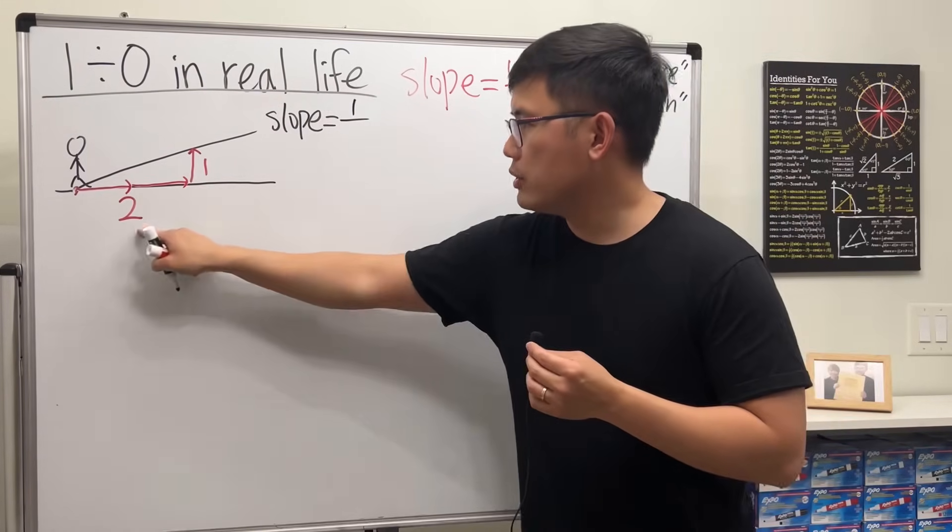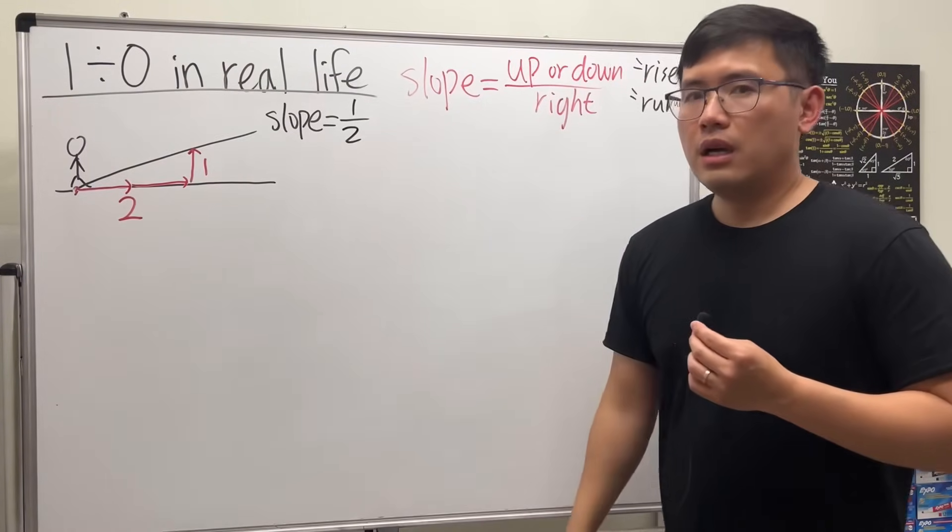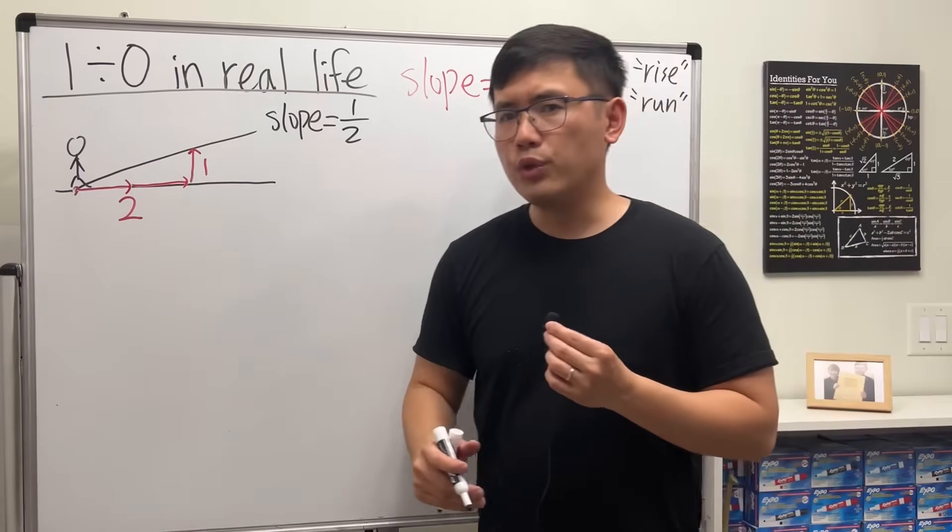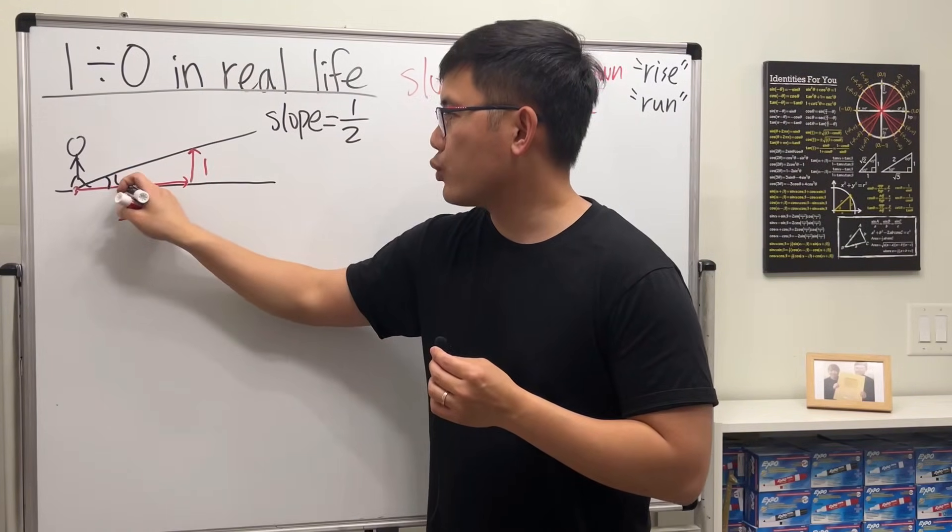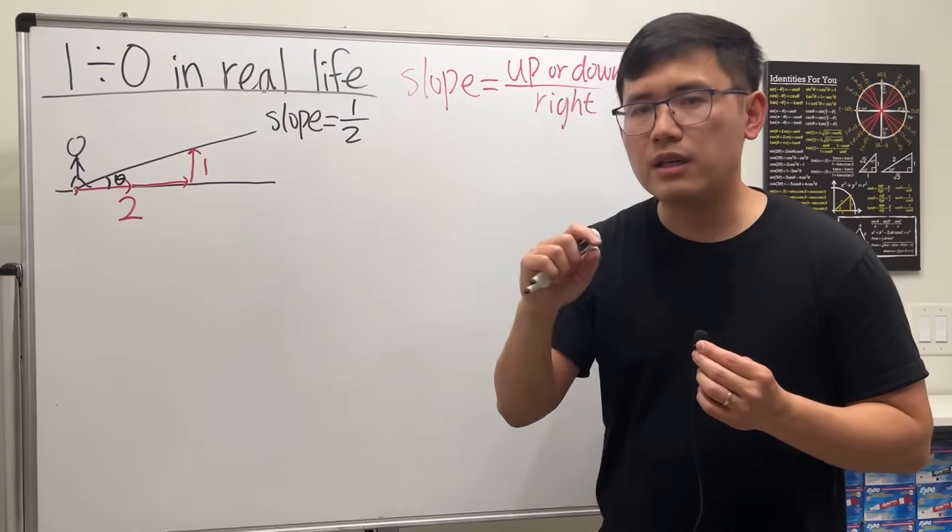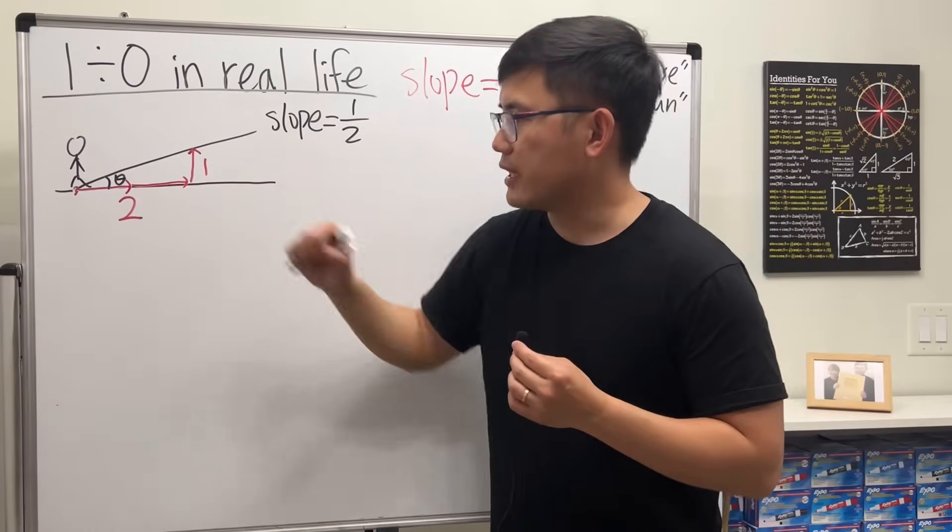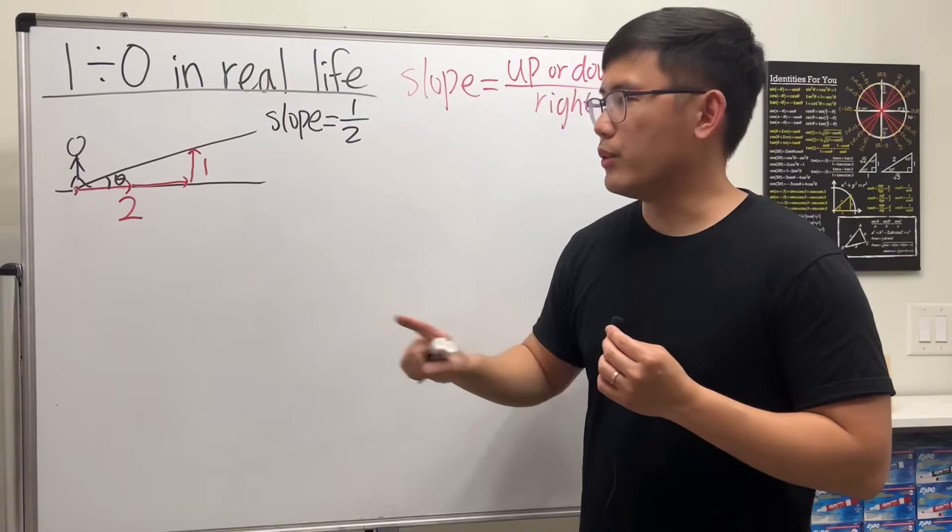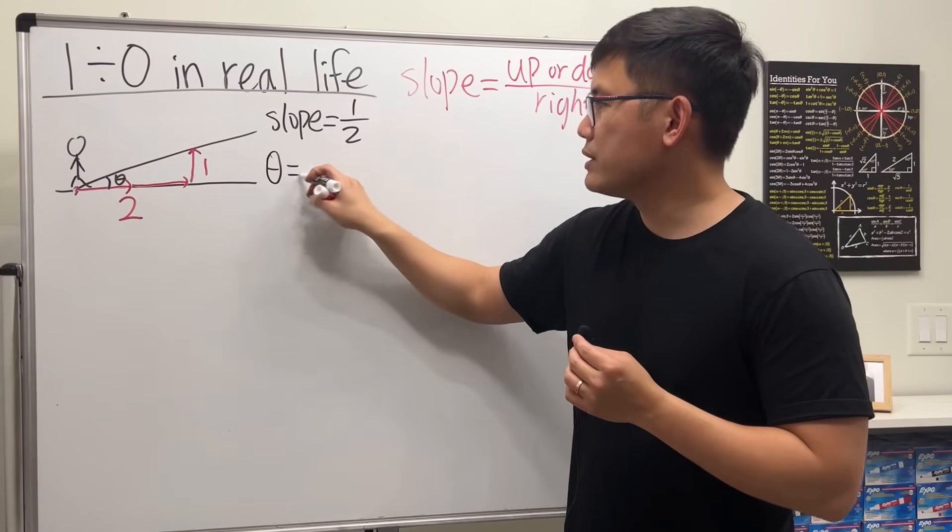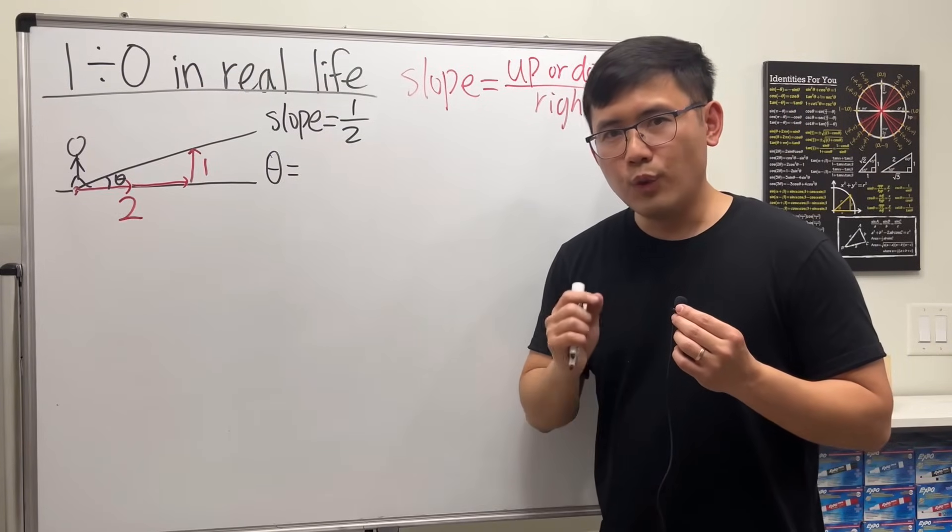Now here's another way to describe how steep this hill is - we can look at the angle right here. Let's use the Greek letter theta. If you want to compute theta, you can do the following: theta equals... we'll use one of the powerful functions from trigonometry called the inverse tangent.